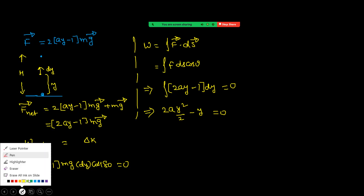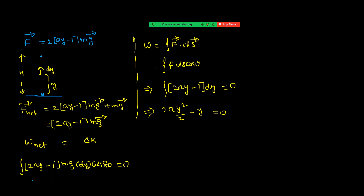Now take limits from 0 to h. Taking the limits: a·h² - h = 0. The 2 cancels, giving a·h² = h, so h = 1/a. That is the maximum height.